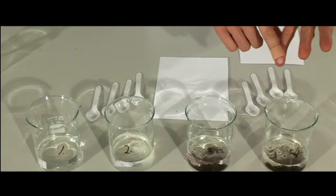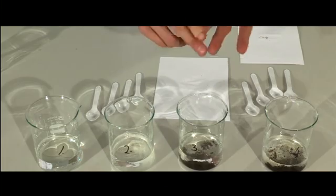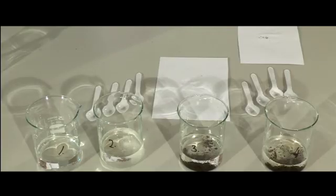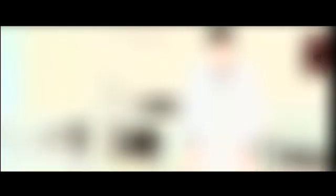So in beaker four we have our oil, our water, our nutrients, the food for the bacteria, and our soil. Hopefully there's lots of cool bacteria that can munch up that oil. Beaker three has just the oil, the water, and soil. Beaker two has just the oil, the water, and nutrients. No soil. Beaker one, just the oil and the water.